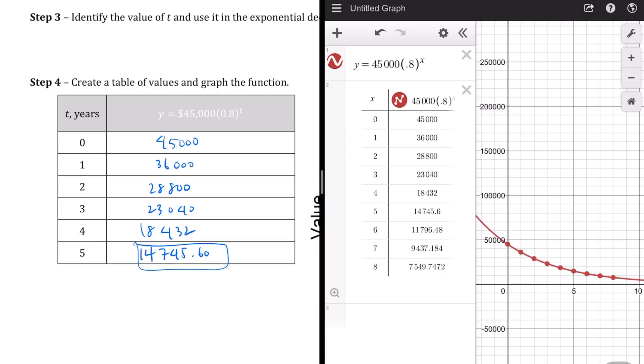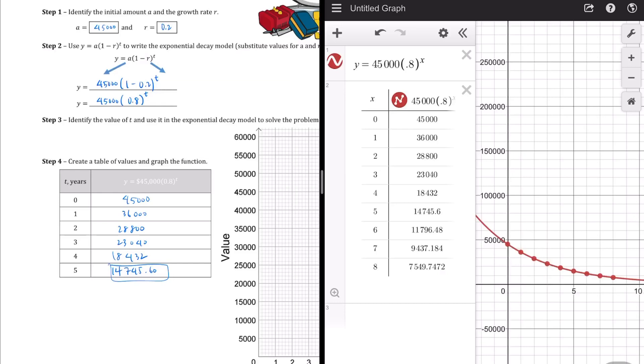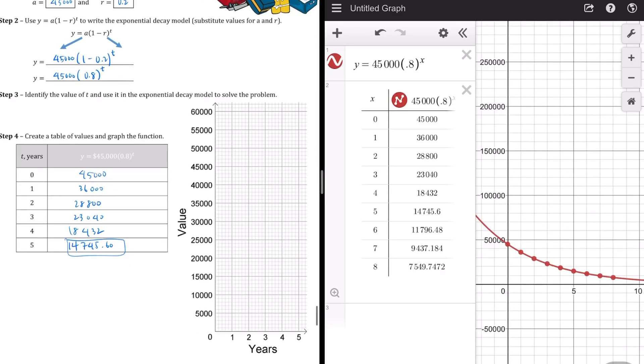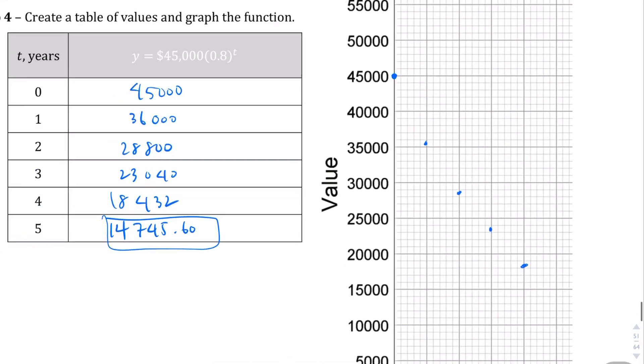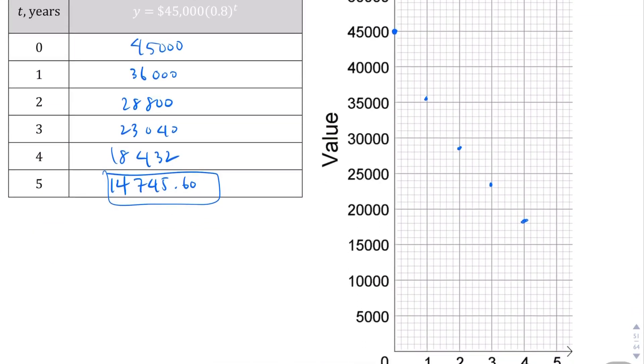But let's go ahead and graph these at 0, 45 right there. 1 and 36 is going to be right there. 2 and 28 will be over here, closer down there. 3 and 23 are going to be over here. 4 and 18, maybe right there. Let me kind of zoom into the credit here itself. And then lastly, at five, it's going to be at 14,000. So a little bit below this. So this graph will look something kind of like this. Again, it doesn't need to be perfect. But there should be a downward trend to what's going on in this section. All right.